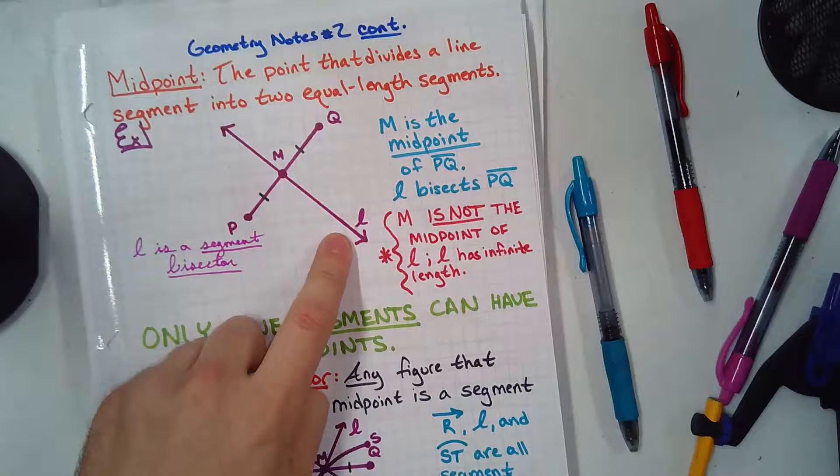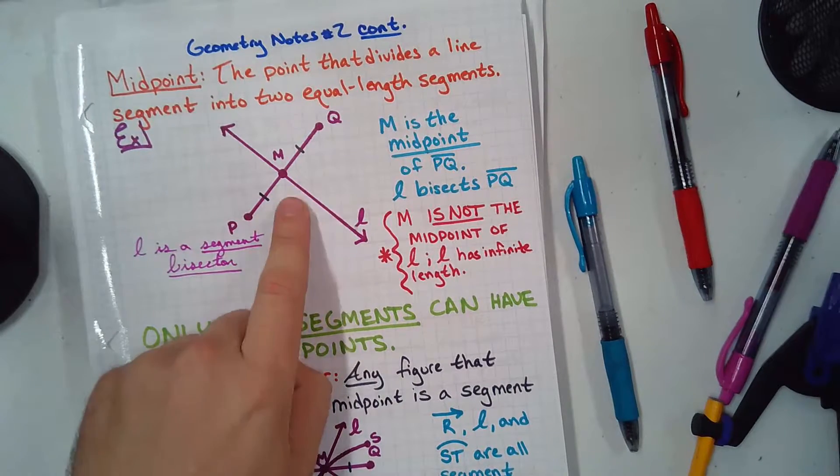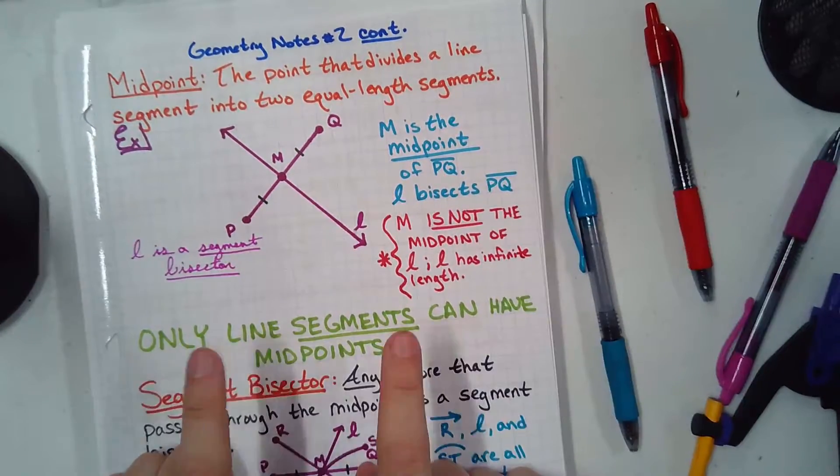Half infinity is still infinity. So, there is no midpoint on line L, because I can say, that's the midpoint of line L, and you can say, no, that's it. Right? And then we argue forever and no one cares.